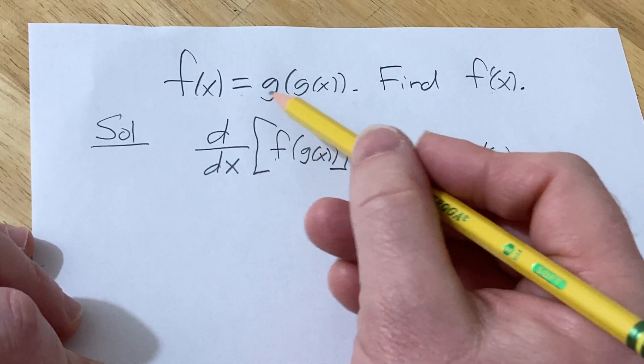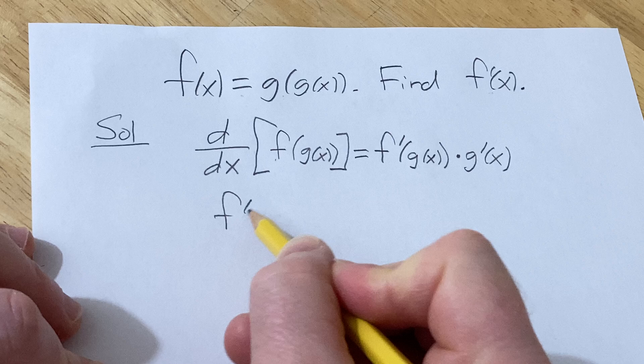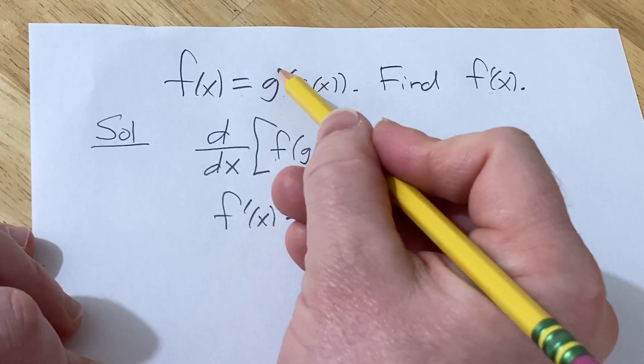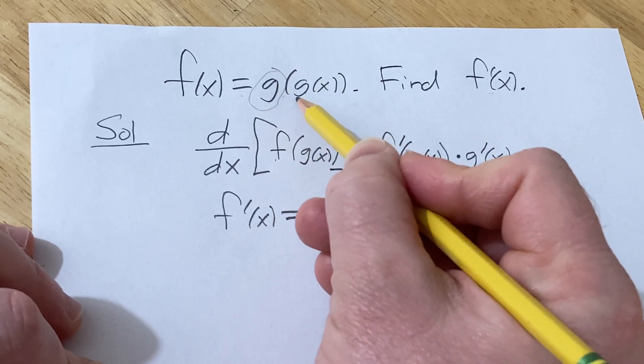So let's apply the chain rule here to this example. Here we have f prime of x. We just have g twice. So this is our outside function. This is our inside function.